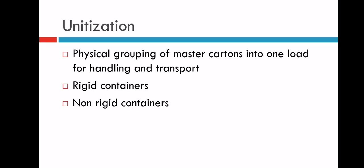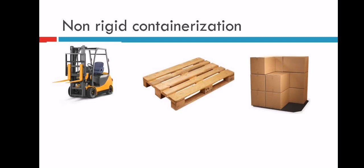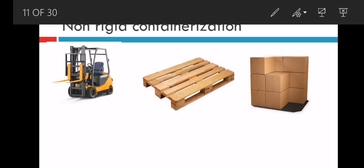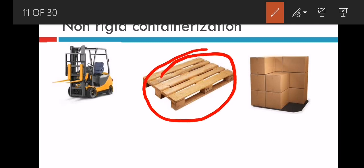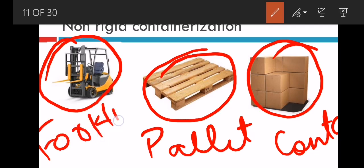Unitization: physical grouping of master cartons into one load for handling is known as containerization. Benefits include improved overall material movement efficiency, reduced damages, provides protective packaging, and provides a shipment unit that can be reused. These are the non-rigid containers: the first machine you can see is the forklift truck. This is palletization, we call them pallets. This is the container, and this is the forklift truck.